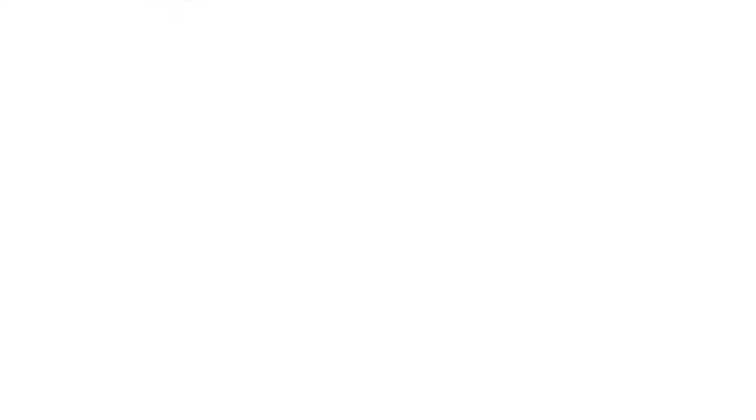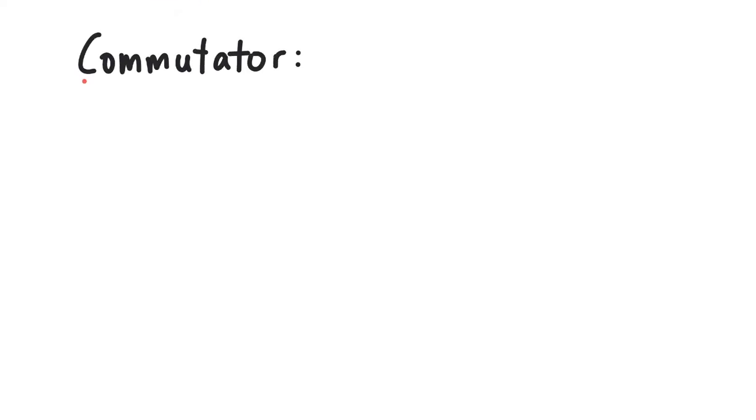Finally, let's talk about the use of knowing the commutation relations. The commutator specifies whether two expressions commute, that is, if you can always exchange them or if there is an additional term. Look at the definition of a commutator. If we rearrange terms, we can interpret this as follows.